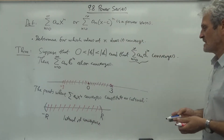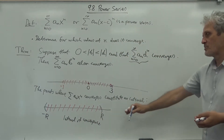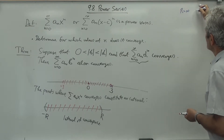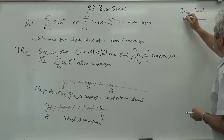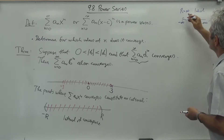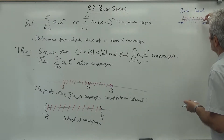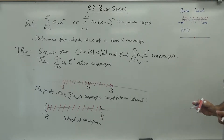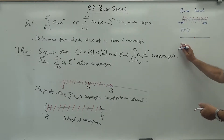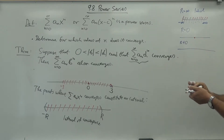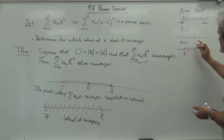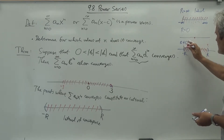There are special cases: if the supremum does not exist, R is infinity and the series converges everywhere on negative infinity to infinity. Or it could be that R equals zero, and the only place it converges is at zero itself. Otherwise, if R is a nonzero finite number, you have convergence on the open interval from negative R to R, and the endpoints require separate analysis.